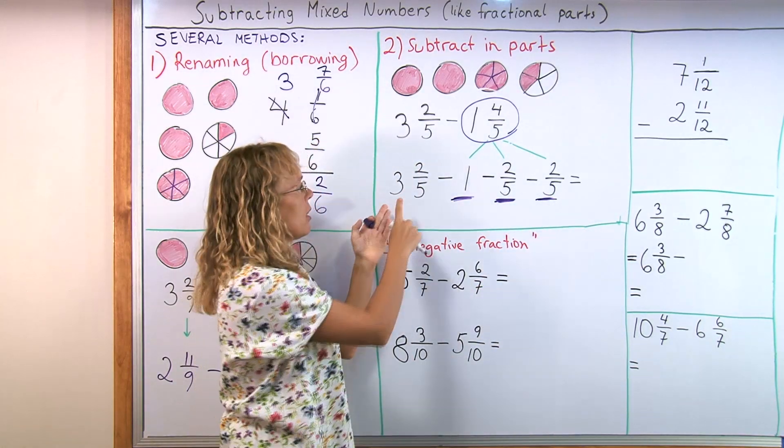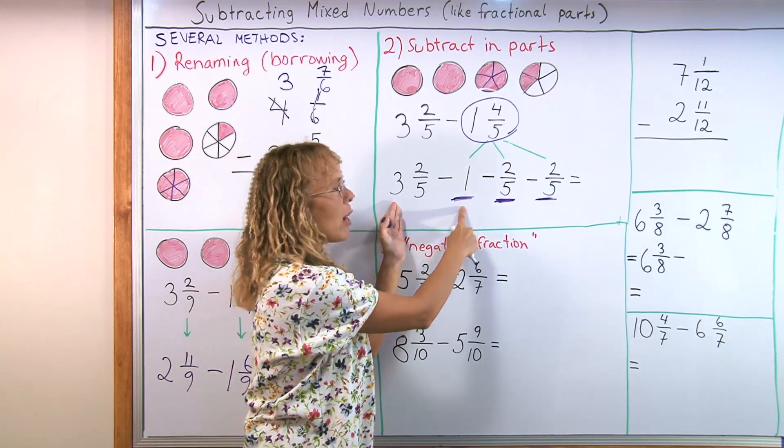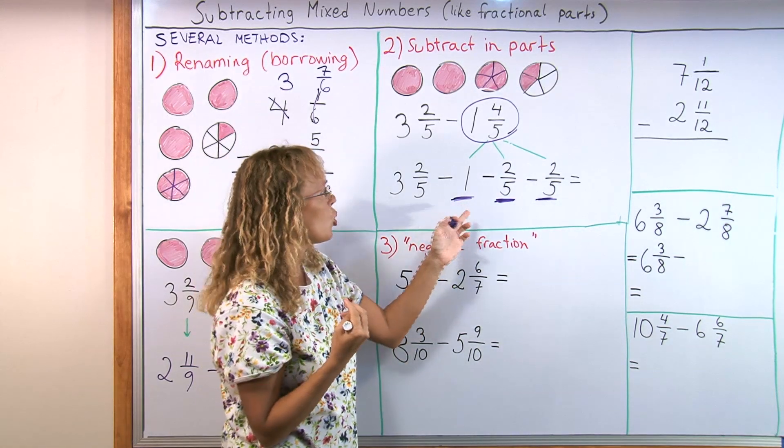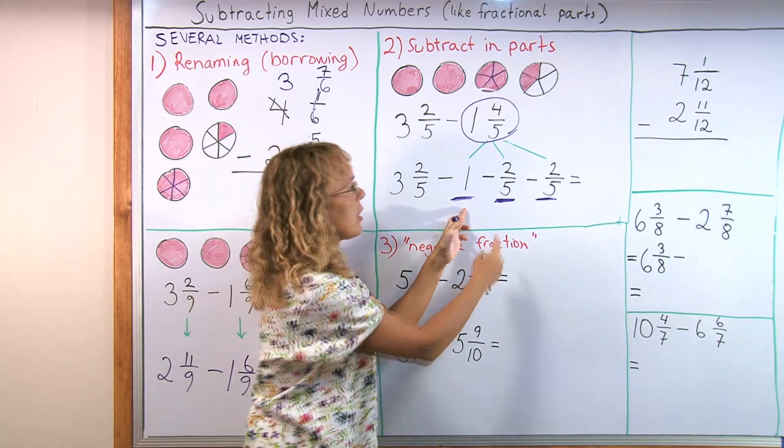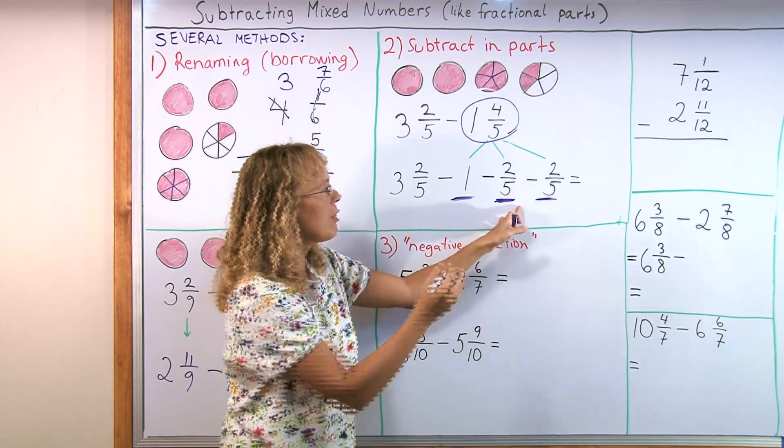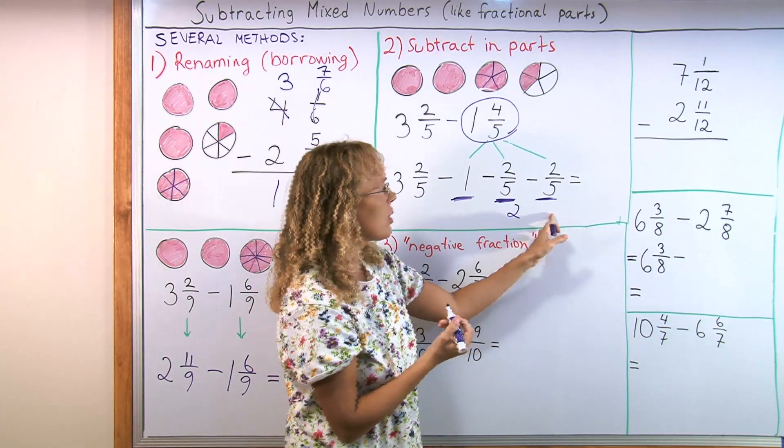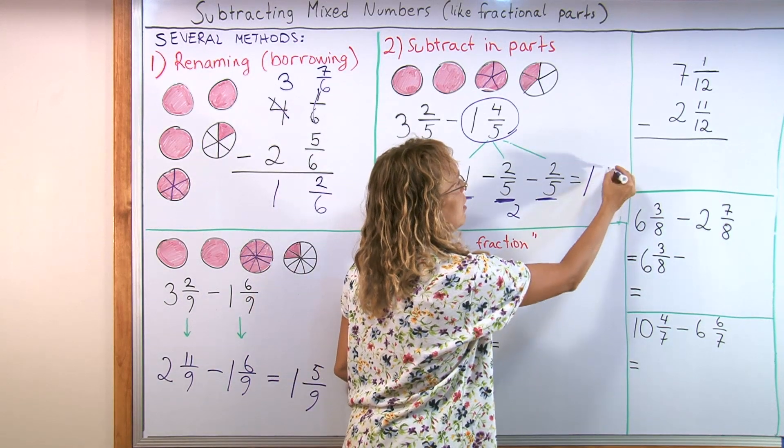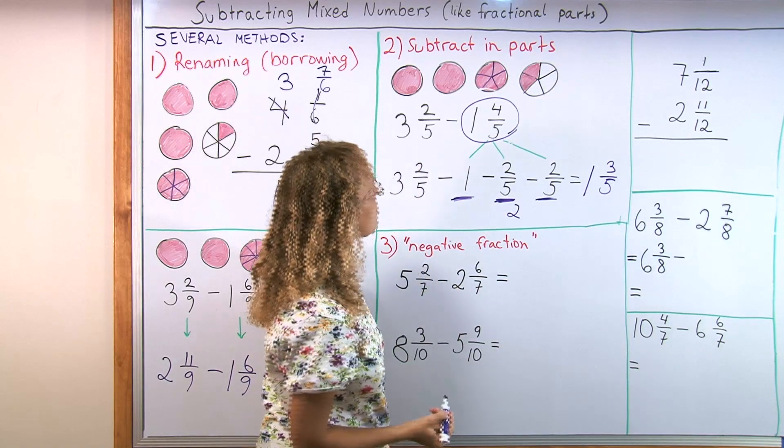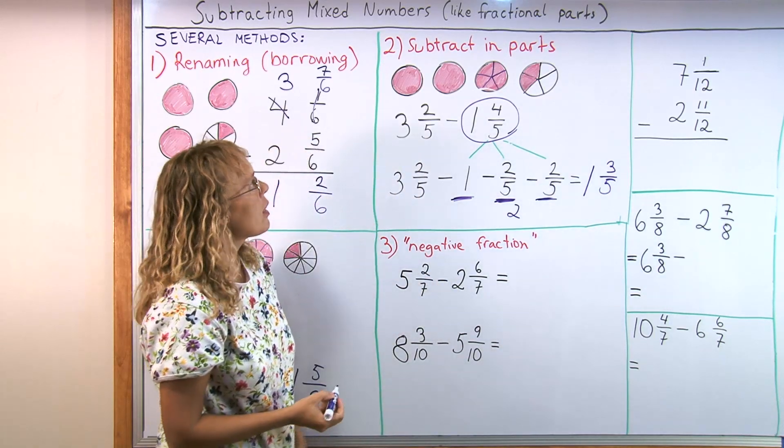So then we subtract mentally. You have 3 and 2/5. Take away 1. What is left is 2 and 2/5. Then take away the 2/5. And what is left here at this point is just 2. And then take away the last 2/5. So you're left with 1 and 3/5.